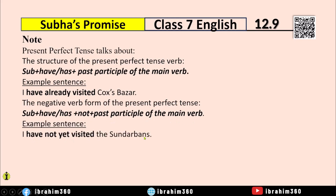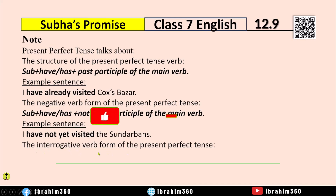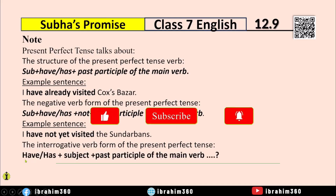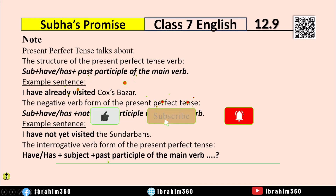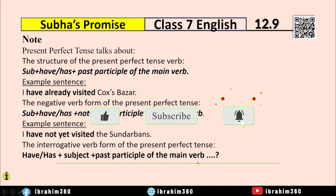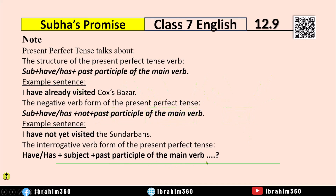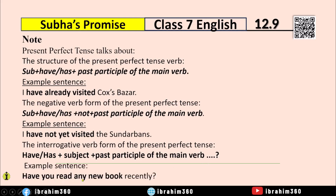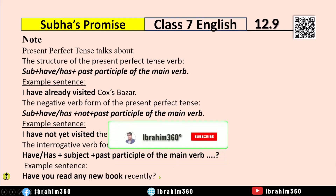For example, negative: 'I have not yet visited Dhaka.' For the interrogative form, 'have' or 'has' comes before the subject, then the past participle. For example: 'Have you read any books?'